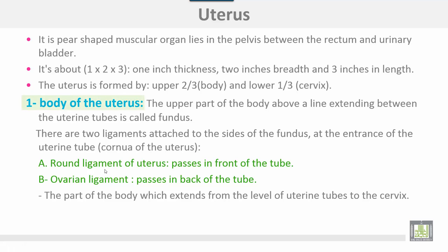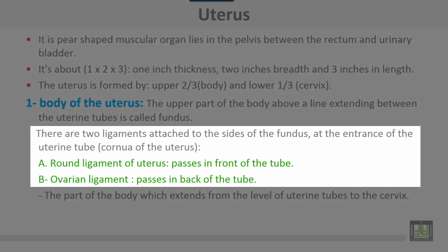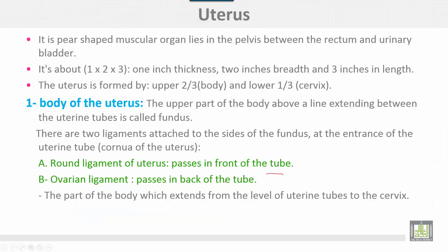The upper part of the body above a line extending between the uterine tubes is called the fundus of the uterus. Two ligaments are attached to the sides of the fundus at the entrance of the uterine tube in the area called the cornua: number one, the round ligament of the uterus, which passes in front of the tube; number two, the ovarian ligament, which passes behind the tube.